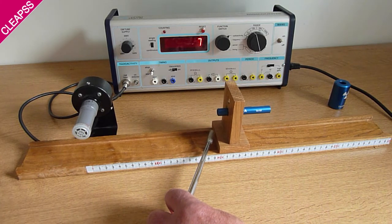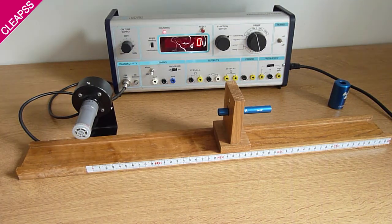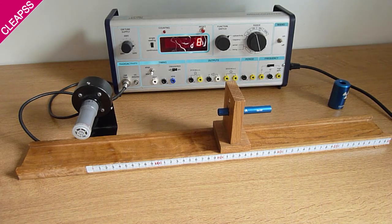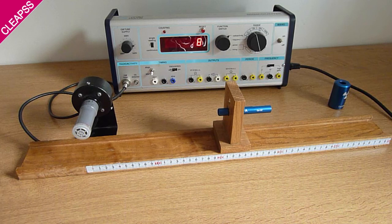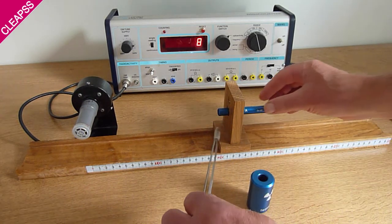And finally, for today, 20 centimeters. The counting statistics would be much better if I'd used 100 seconds, rather than the 10 seconds I've used today. So that demonstrates how to do the inverse square law.